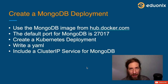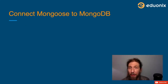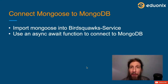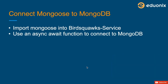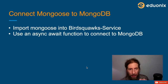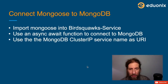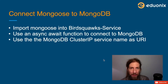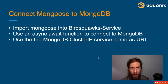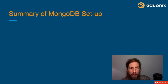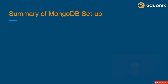So it deploys both the MongoDB database and a cluster IP service for communication. Then we had to connect to our MongoDB — in our BirdSquawk service, we imported Mongoose and created an async await function to connect to MongoDB. We put app.listen inside of it and then called the function. When connecting with mongoose.connect, we used the MongoDB cluster service name as a URI, copying and pasting the exact service name and adding the colon and port. We were also able to add TypeScript and get our app ready to be more complex.